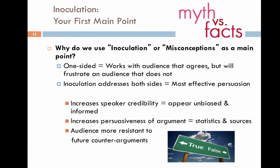Why we use inoculation as a main point is because everyone in the audience is going to have a different opinion, and if you only address one side of the issue it's going to frustrate the audience. Inoculation shows both sides and it's the most effective type of persuasion. It helps you appear unbiased and informed because you have facts about both sides, making you a more credible speaker and increasing the persuasiveness of the argument. Lastly, the audience will now be resistant to future counter-arguments because they know both sides of the story.